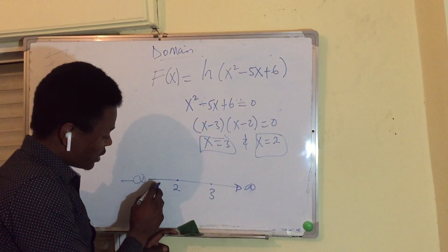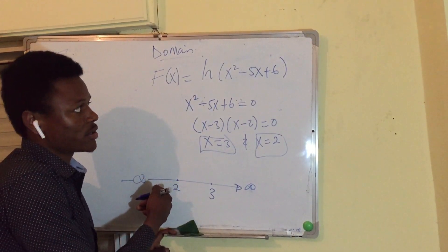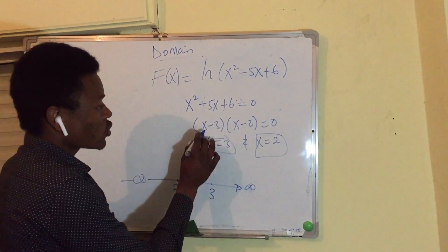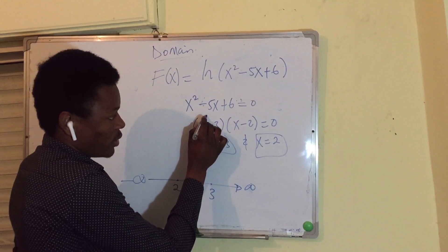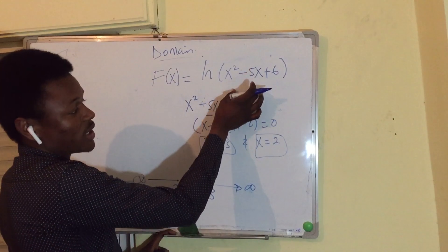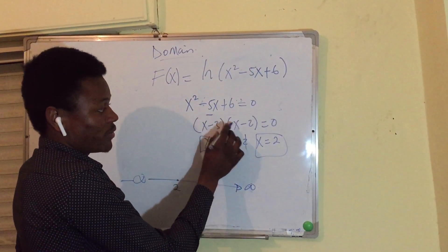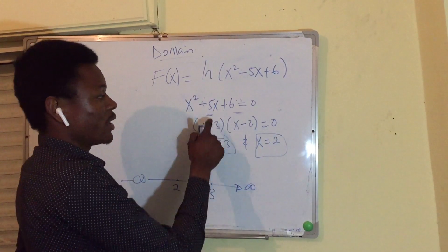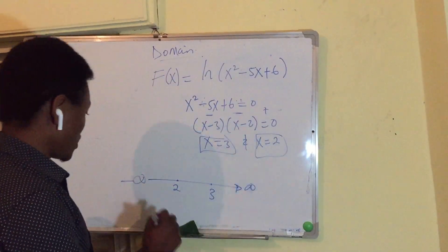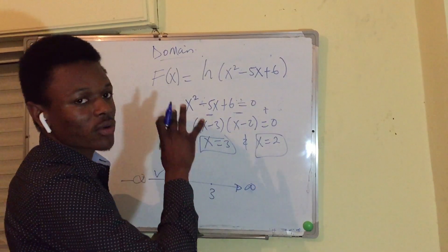For the interval x < 2, let me test x = 0, because it is easier. So 0 - 3 is negative, and 0 - 2 is negative. Negative times negative is positive — so this interval gives a positive value, which is acceptable.